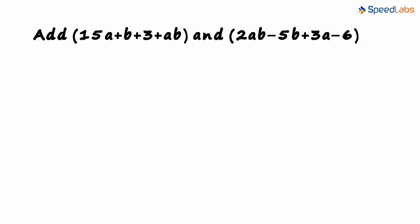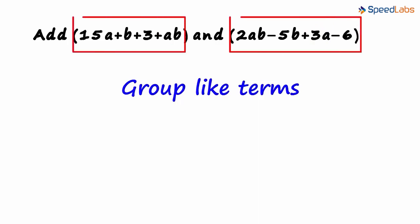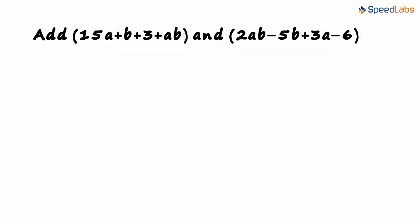We have been asked to add 15a plus b plus 3 plus ab and 2ab minus 5b plus 3a minus 6. What we have seen until now is how we group like terms and then solve each group. We have to add two expressions here.